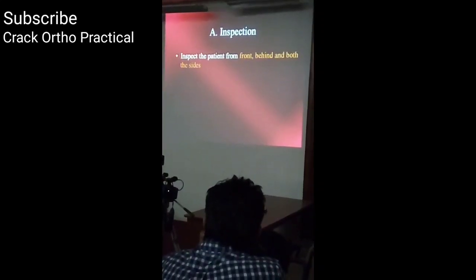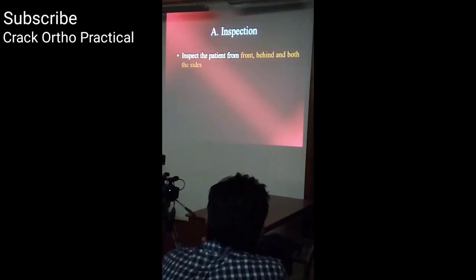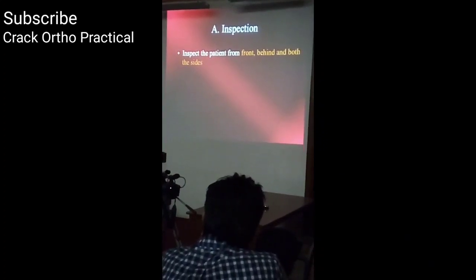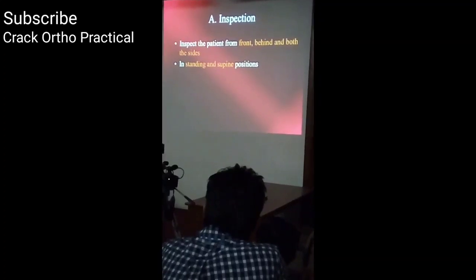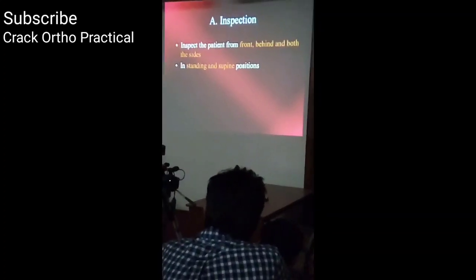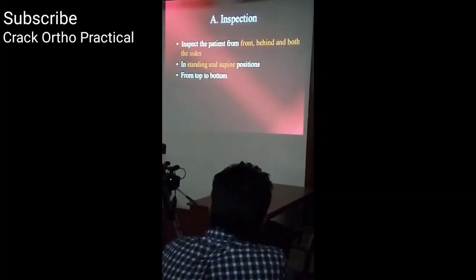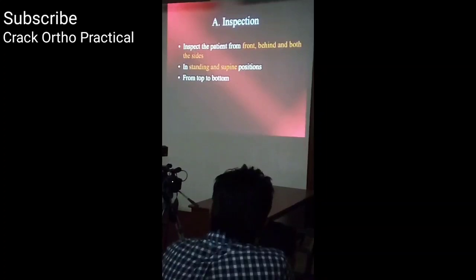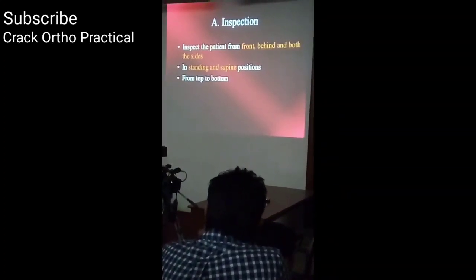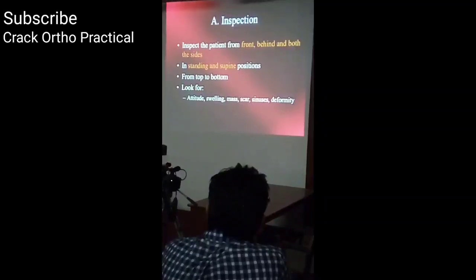This is a broad outline for understanding the examination of the hip. Inspect the patient from the front, behind, and both sides. Inspect in both standing and supine positions, from top to bottom, so you don't miss any finding. Sometimes the examiner may ask about findings in other areas — for example, a flexion deformity of the elbow in a hip case. Look for attitude, swelling, scars, sinuses, or visible deformity.